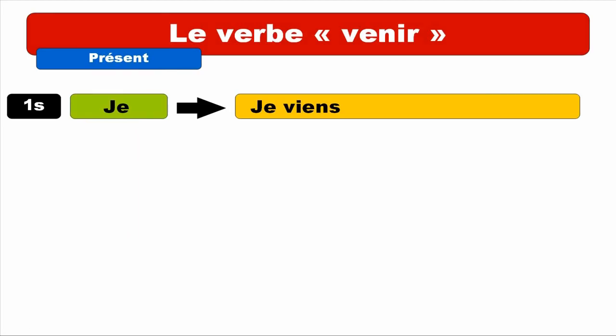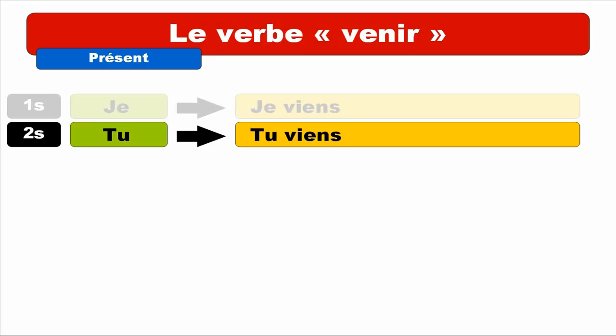First person of the singular JE — the form we get is JE VIENS. You can notice it ends with S but we don't pronounce it. We actually only pronounce V and then the IENS — VIENS. JE VIENS. Repeat. JE VIENS. Second person — TU. We get the same sound — TU VIENS. Repeat. TU VIENS.